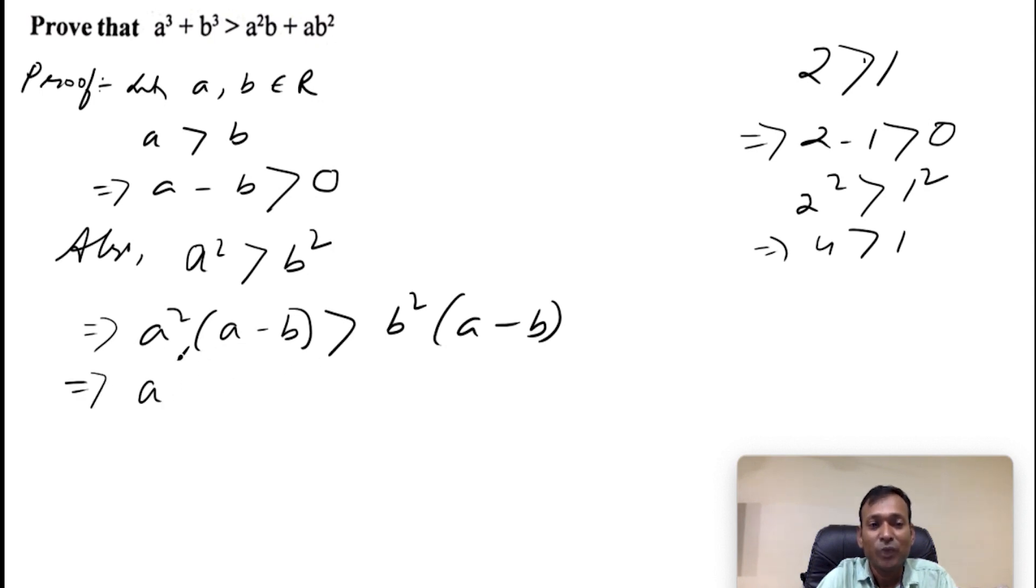Now we will multiply. We will remove the bracket. So to remove bracket, we have to multiply. a² into a is a³. a² times b is a²b, greater than b² times a is ab². b² into b is b³.